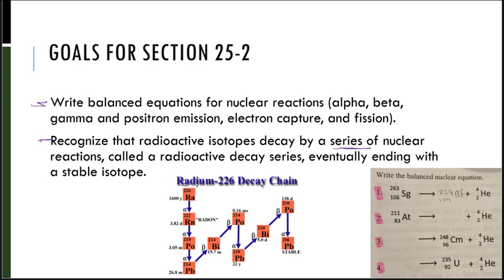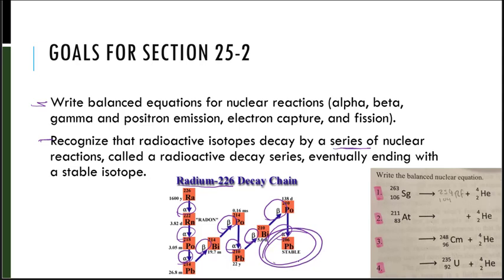Here's a couple of examples looking at the radium-226 decay chain. We have an alpha decay, an alpha decay, an alpha decay, then a beta, a beta, then an alpha, then a beta, a beta, an alpha, and then we have a stable isotope.